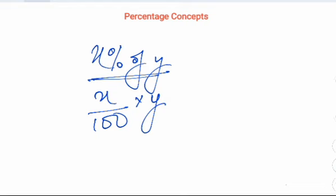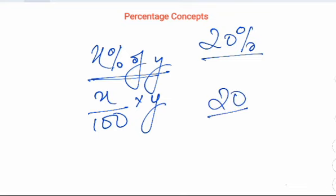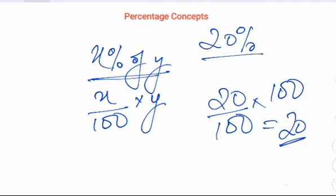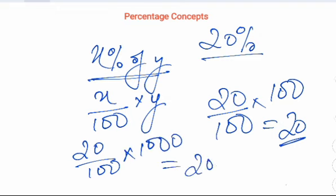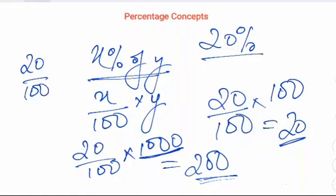If suppose in a question it is given that 20%, 20% doesn't mean 20. It usually means 20% of something. If we want to calculate 20% of 100, it will come out to be 20. If we have to calculate 20% of 1000, then it will come out to be 200. And if we want to calculate 20% of 4, it will come out to be 0.8.